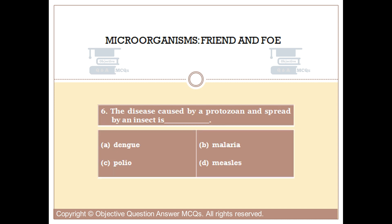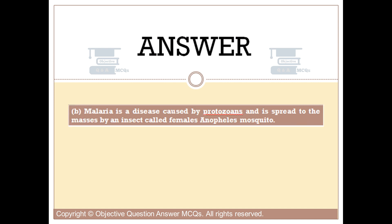Question number six. The disease caused by a protozoan and spread by an insect is blank. Option A: Dengue. Option B: Malaria. Option C: Polio. Option D: Measles. The right answer is option B. Malaria is a disease caused by protozoans and is spread to the masses by an insect called the female Anopheles mosquito.